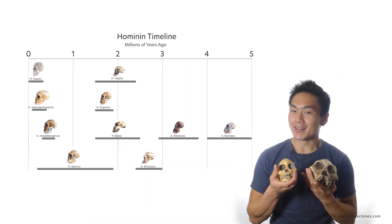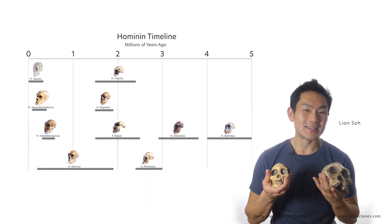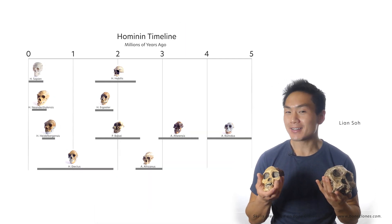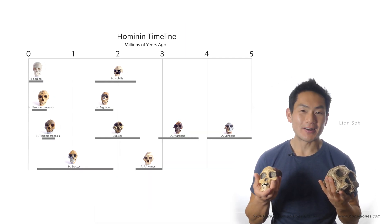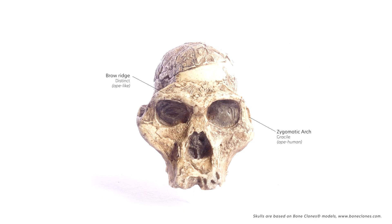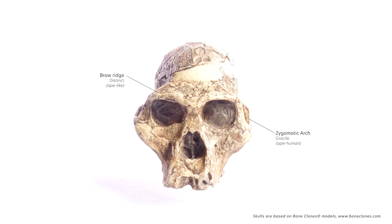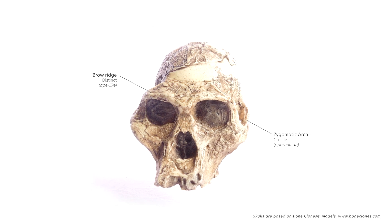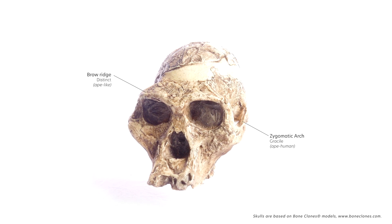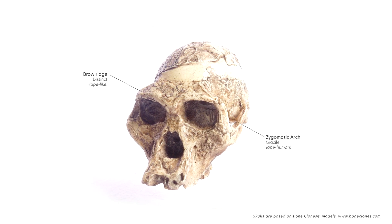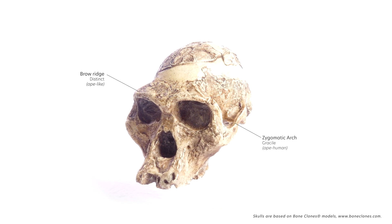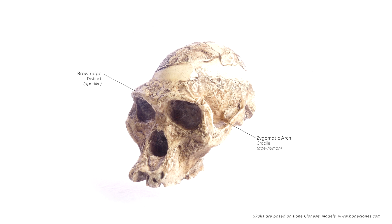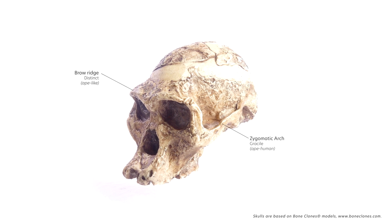Australopithecus africanus lived in the middle Pliocene to early Pleistocene of South Africa. In terms of skeletal structure, it is very similar to that of Afarensis, with both species having a mix of ape-like and human-like features.